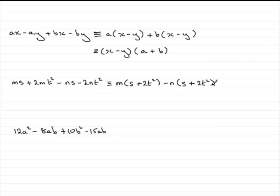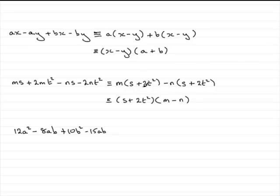So s plus 2t squared is a common factor across both terms. We pull that out to the front of a bracket — don't forget to put it in brackets. Inside the second bracket goes m and then minus n. So we've factorised it: (s plus 2t squared) times (m minus n) are the two factors.